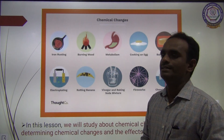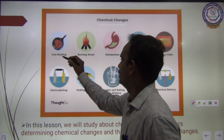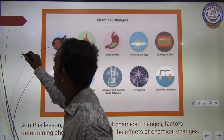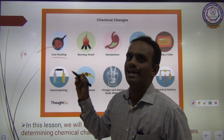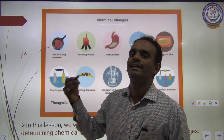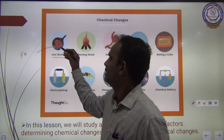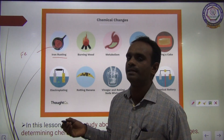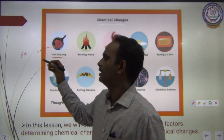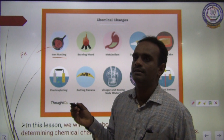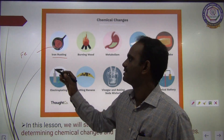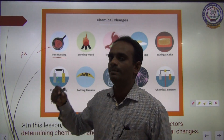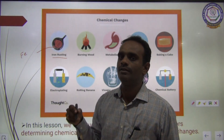Chemical changes — the first one is iron rusting. On exposure of iron (Fe), after a period of time, it will get rust. All the iron instruments and iron particles become rust due to atmospheric oxygen. Oxygen plays a vital role in the rusting of iron. That is why in our houses, we paint the iron windows and iron rods.